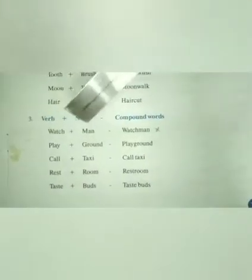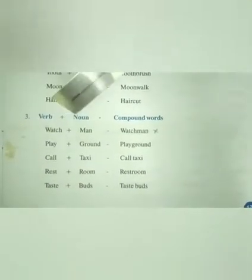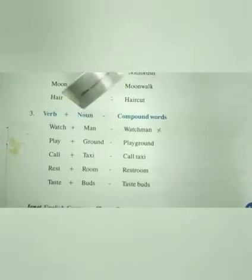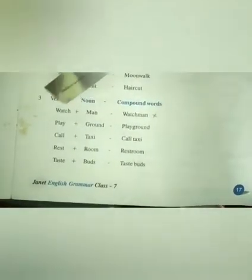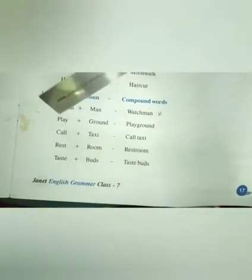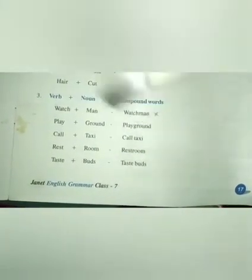Verb plus noun compound words — action words plus naming words. Examples: 'watch' plus 'man' gives 'watchman'. 'Play' plus 'ground' gives 'playground'. 'Call' plus 'taxi' gives 'call taxi'.